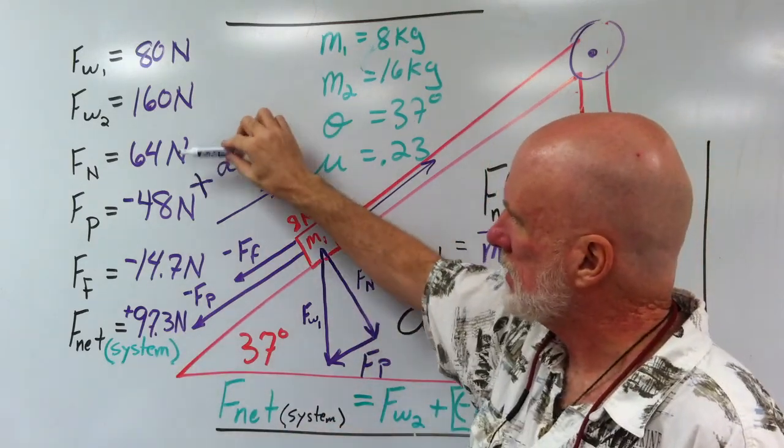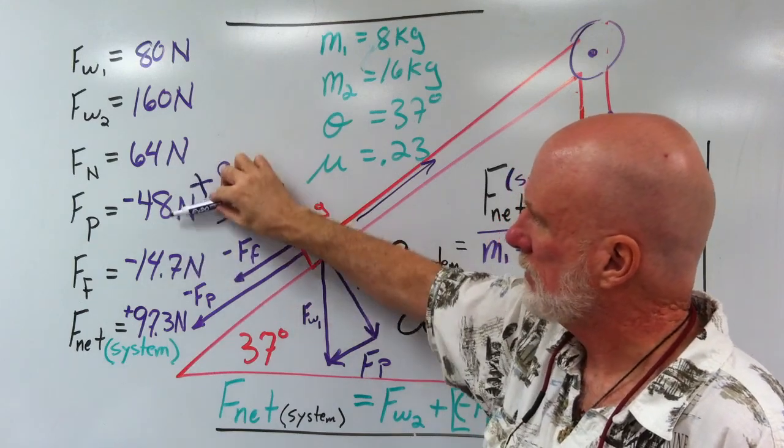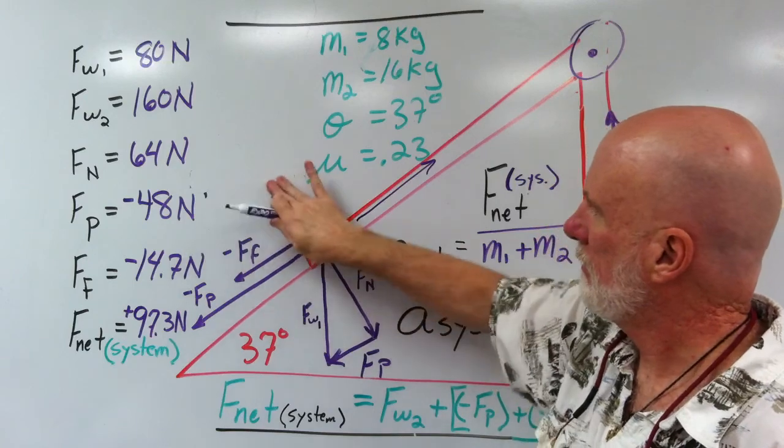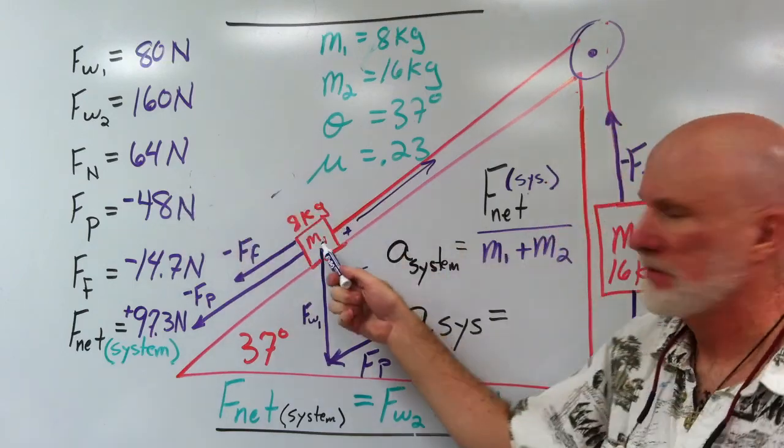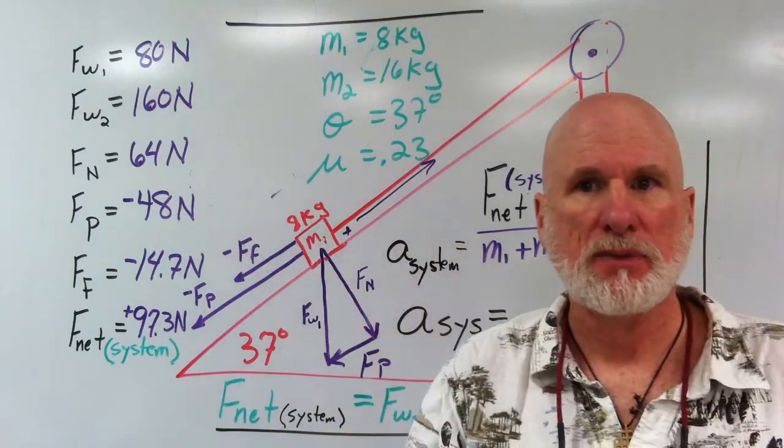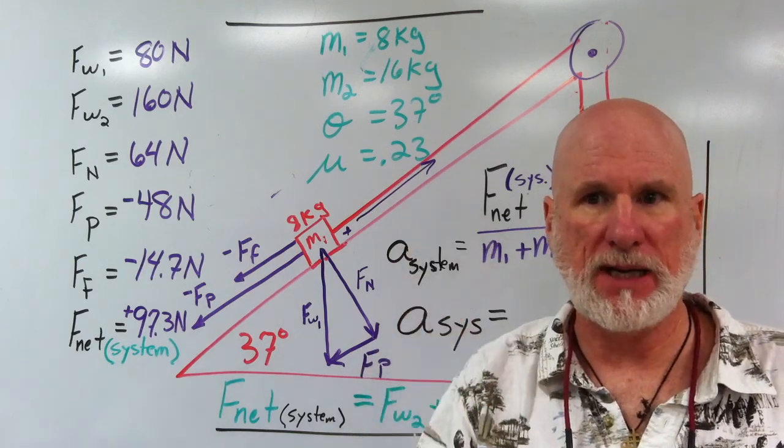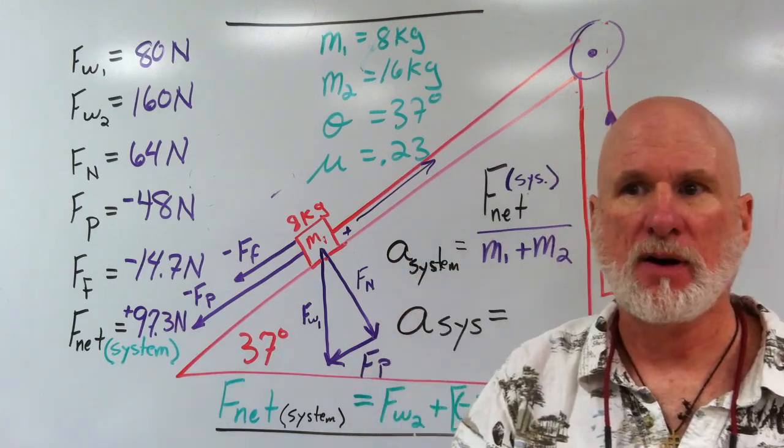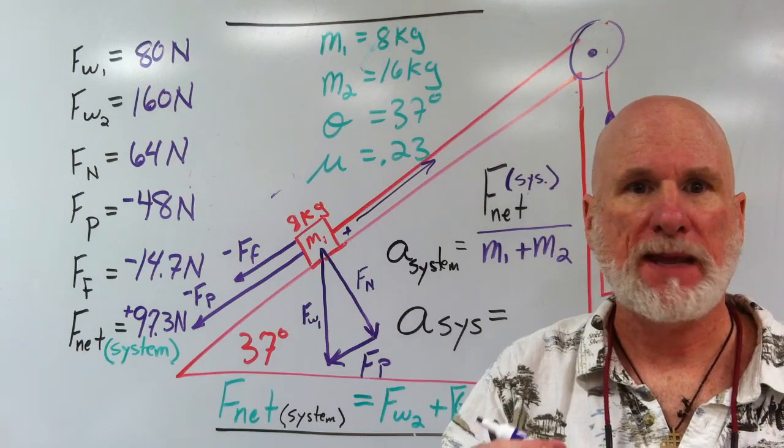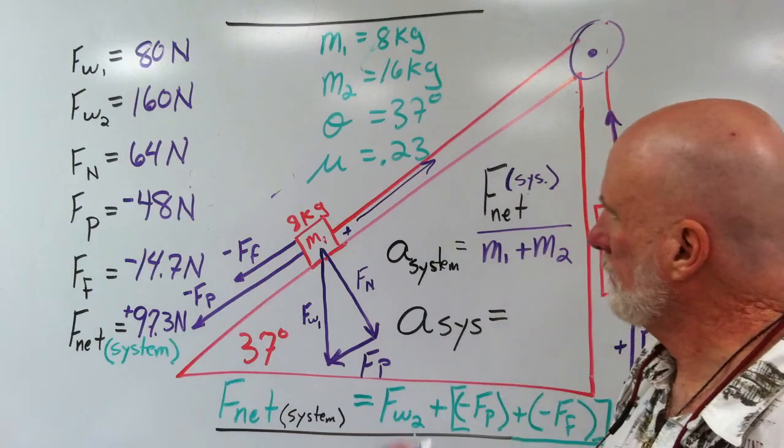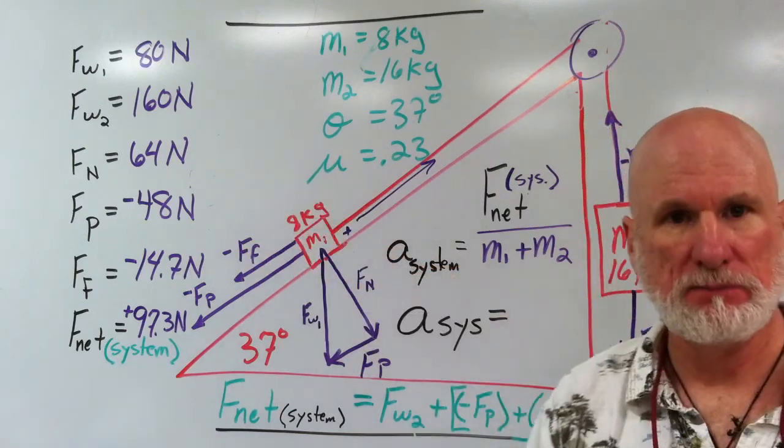These values here are based on this, M1. So Fn, Fp, Ff are all based on M1 or Fw1. Okay. Easy? Yeah.